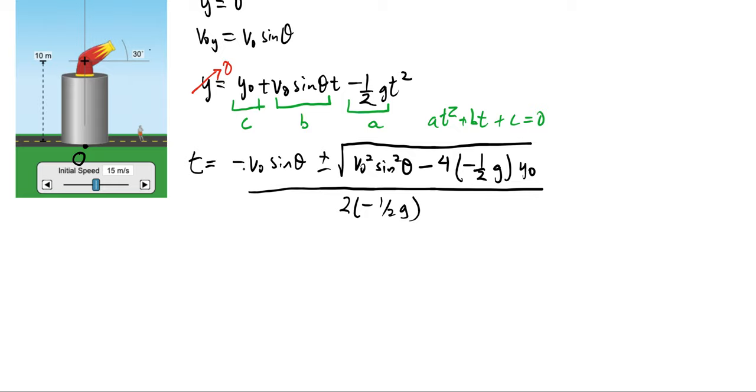Now, you'll notice that we have a negative sign on the top and the bottom, so I'm going to go ahead and cancel that. When I cancel a negative sign out of a plus-minus, it doesn't change it, so I can rewrite this as t is equal to v-naught sine theta plus or minus square root of v-naught squared sine squared theta. 4 times a half is negative, 4 times a half is 2, negative cancel, or negative and negative is a positive.